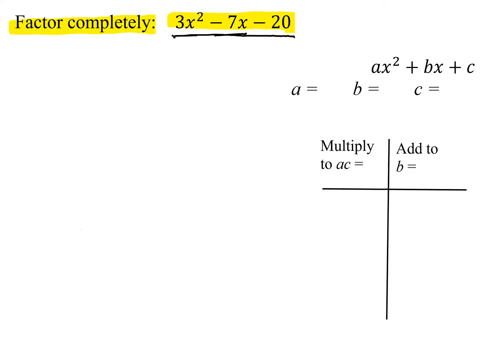So we're going to factor this by the AC method, which means I'm comparing it to ax squared plus bx plus c. So I have to identify a, a is the coefficient of the x squared, in this case it's 3. b is the coefficient of the x, it's negative 7, and c is the constant, it's negative 20. So I have to figure out a times c, so a is 3, c is negative 20, so my AC is negative 60.